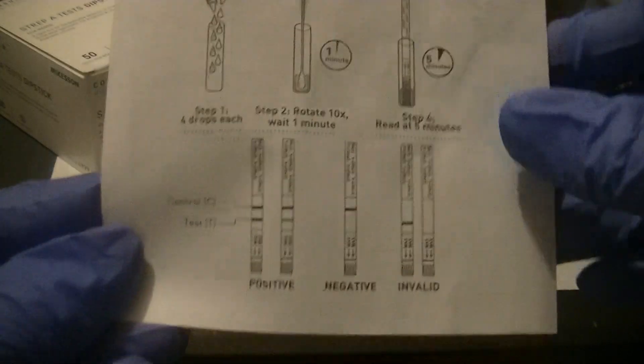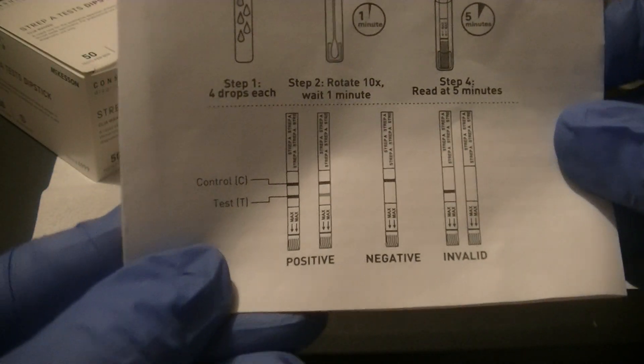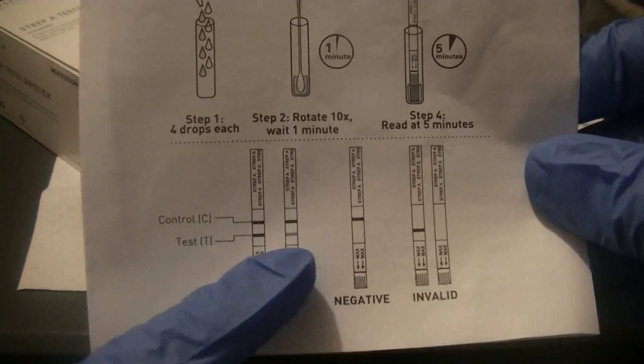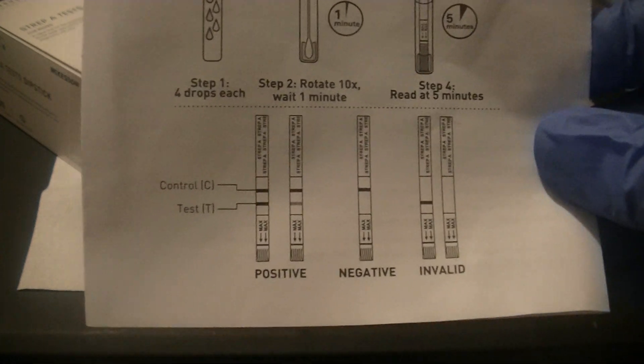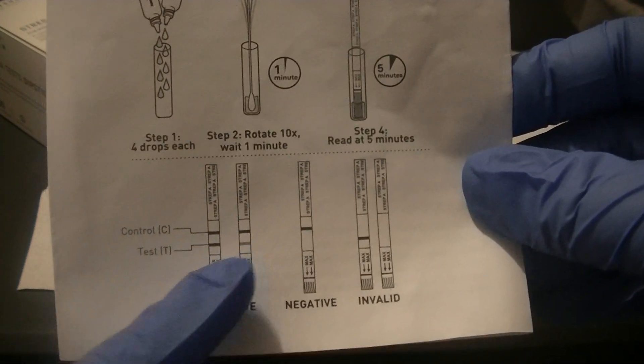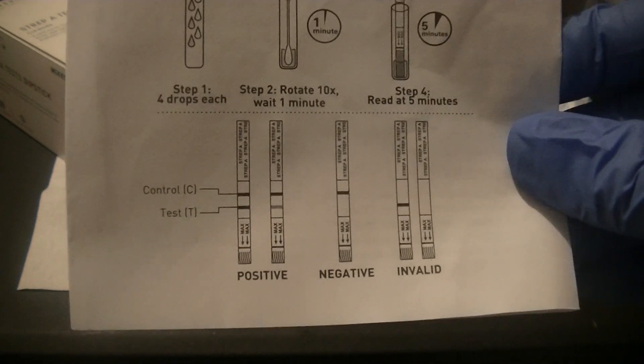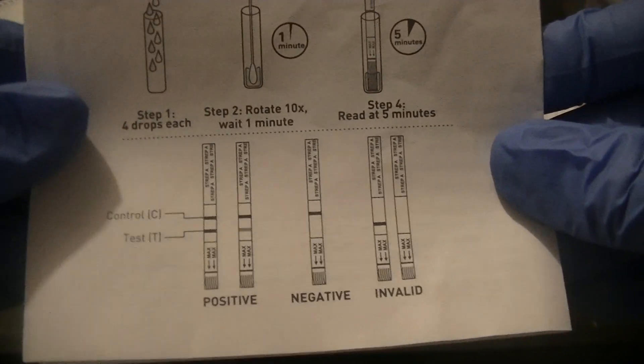Now a positive test would be any amount of line seen in the test area at five minutes. You do have to wait the whole five minutes because that line that shows up might be rather faint and you might not see it until almost the end of the incubation.